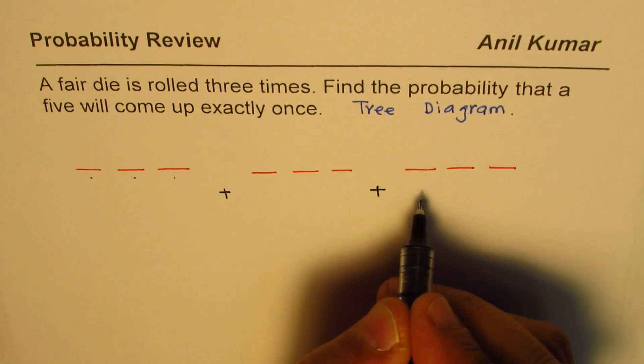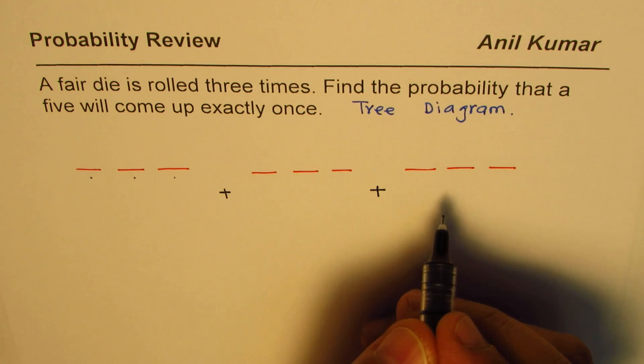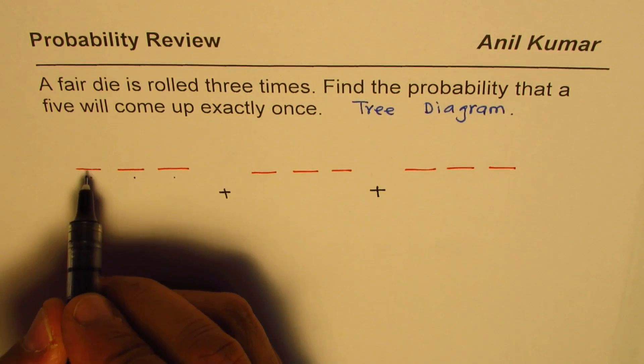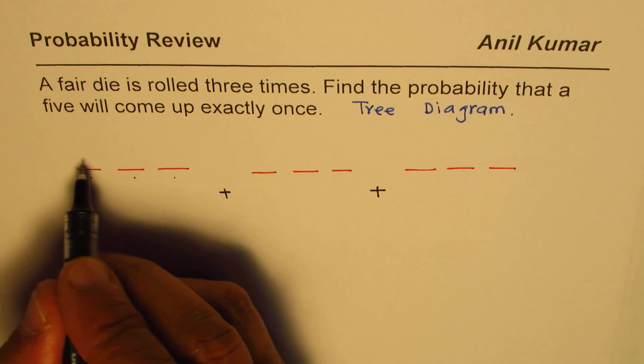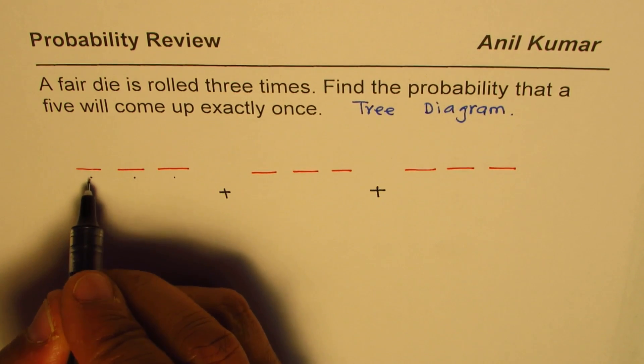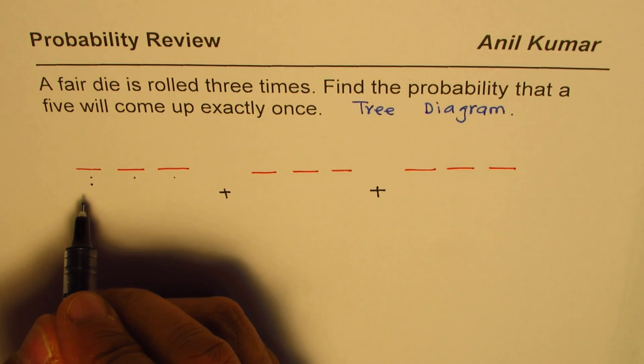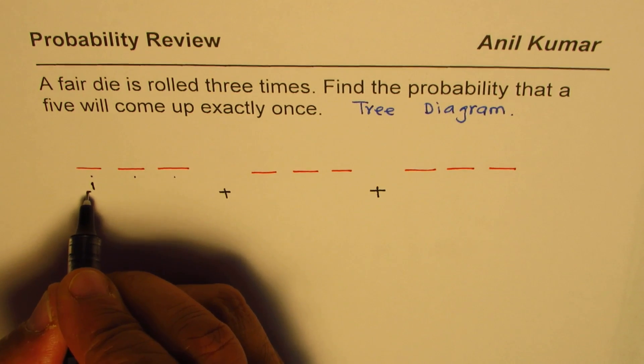These three cases we'll see what they are and then we'll just add them up to get our final probability. Now if five comes in the first position, what is the probability of getting five here? We are getting five here so it is one out of six.